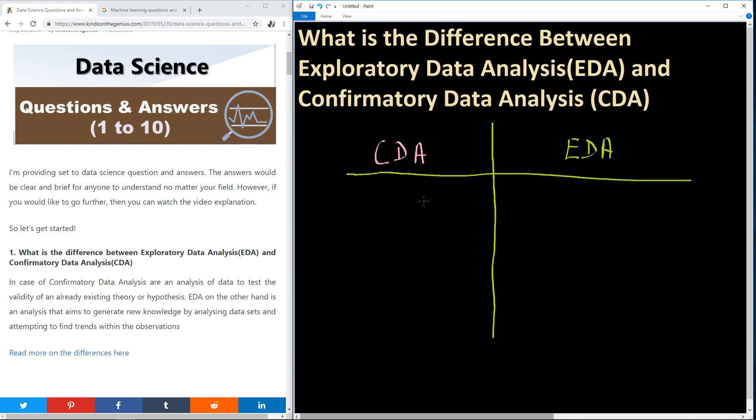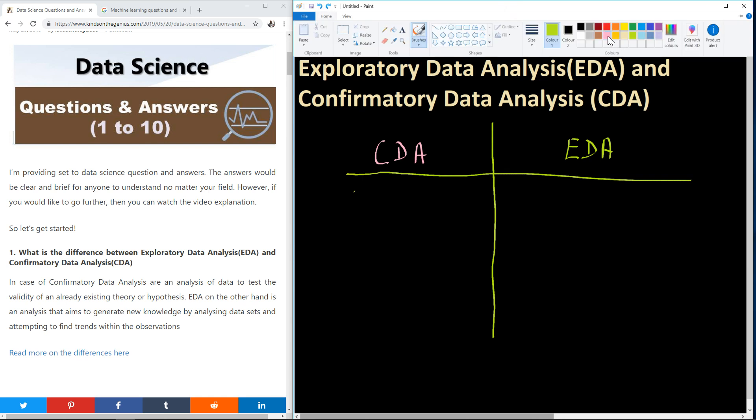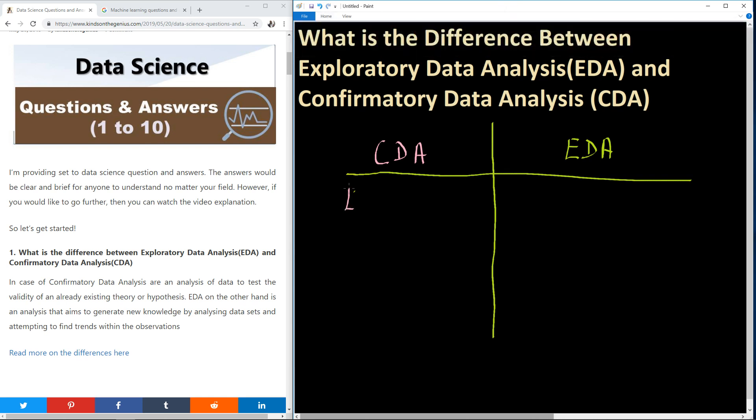Let's start with the first one. CDA, in this case, is an analysis of data to test the validity of existing hypotheses. We have existing hypotheses or theory.